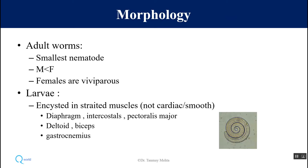Morphology: it is the smallest nematode — this is a very important fact to remember. As usual with all nematodes, male worms are smaller than the female worms. Females are viviparous, meaning the female will directly give birth to larval forms. These larvae get encysted in striated muscles, not in cardiac or smooth muscle. The common muscles where larvae get encysted are the diaphragm, intercostal muscle, pectoralis major, deltoid, biceps, and gastrocnemius.